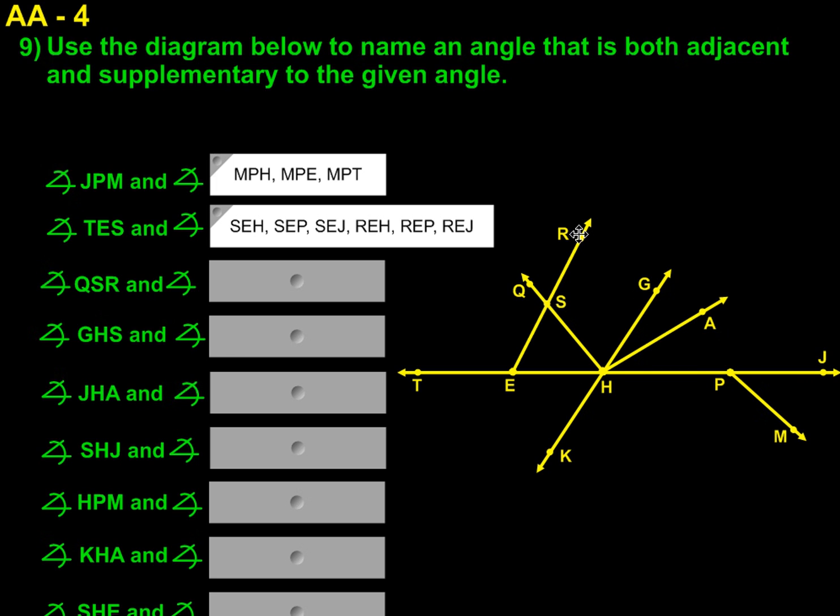We also can come up here from the R and do REH, REP, and REJ. They would all work with E being the vertex for those particular angles and creating a 180 degree straight line angle.